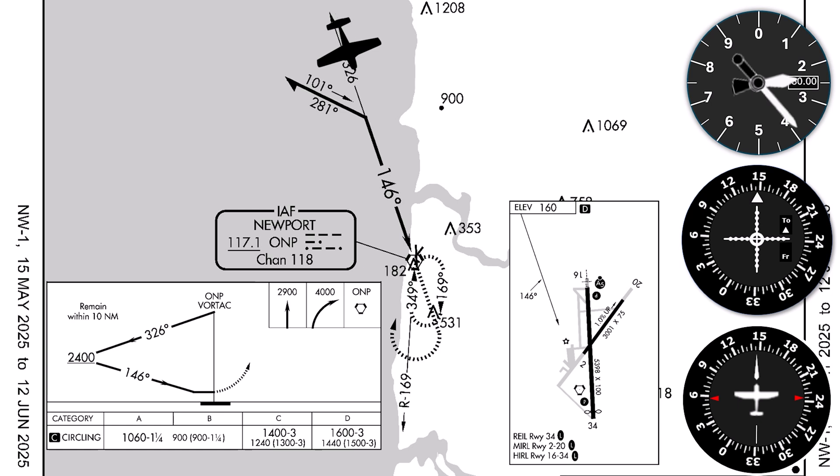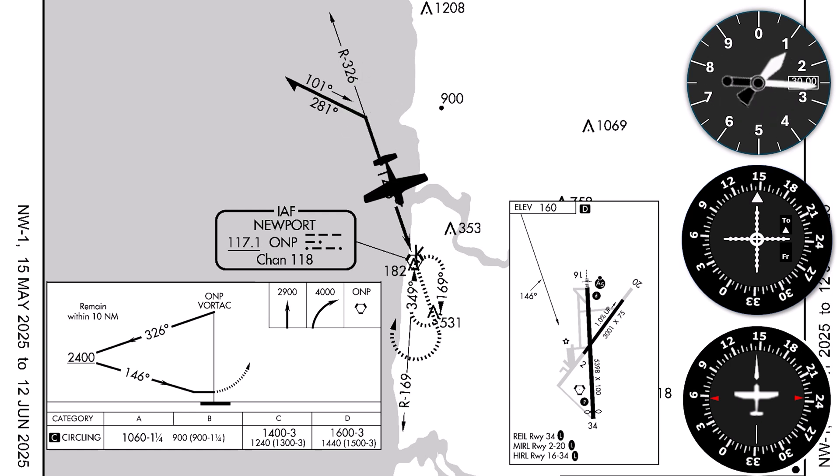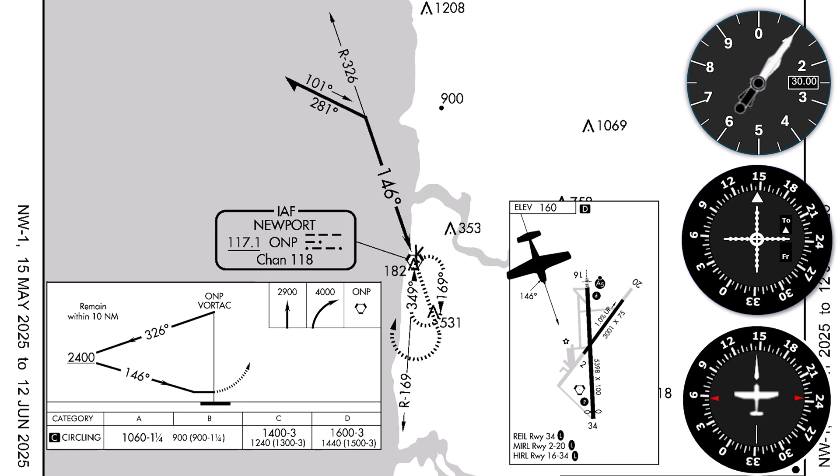Once we're established inbound, we can descend again from 2,400 to the MDA of 1,060 feet. Notice that there's no final approach fix, unlike on many approaches. The final approach segment, where we can descend below 2,400 feet, begins when we're established inbound. We level off at around 1,100 feet as a buffer above the MDA and start looking for the runway. The approach course has us coming on a diagonal to the runway, so we'll break off and circle to our runway when we have the visual cues in sight.